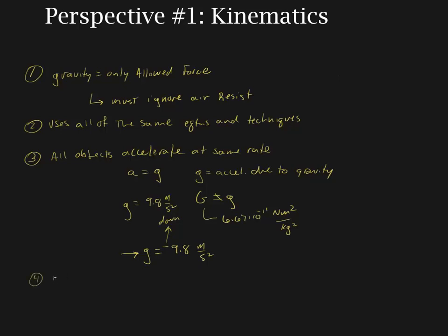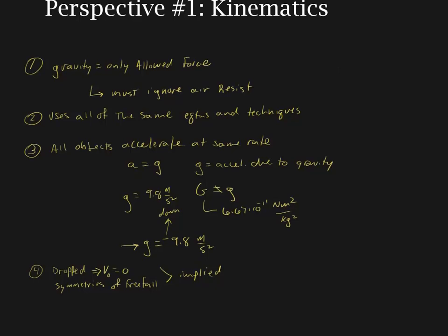Fourthly, we can assume that any time something is dropped, dropped is the same thing as saying that v initial is equal to zero. And we're going to utilize the symmetries of freefall. But this is a big deal because this is implied information, and it is not explicitly stated in most problems. You just have to know that acceleration is 9.8. A dropped rock has a zero initial velocity. So just pay attention to that. You'll catch on as you do more of this.